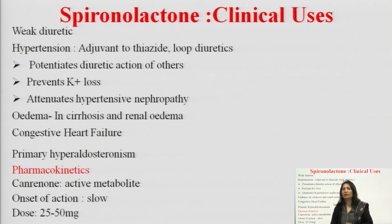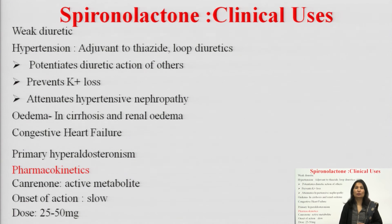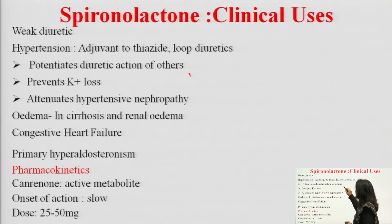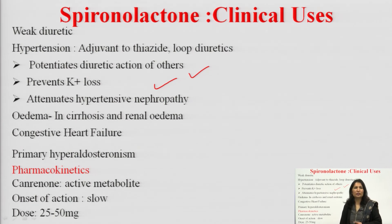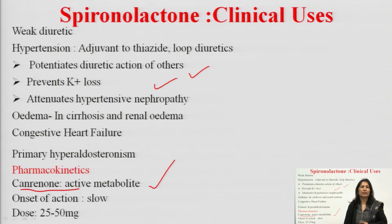Uses of spironolactone: because it is a weak diuretic, it cannot be used alone but is used in combination with other diuretics — loop diuretics and thiazides — to potentiate their diuretic action and prevent potassium loss. It is also used in hypertension, edema (hepatic and cardiac), and primary hyperaldosteronism. Its active metabolite is canrenone, which is responsible for its pharmacological action. It has a slow onset of action; dose is 25 to 50 mg.